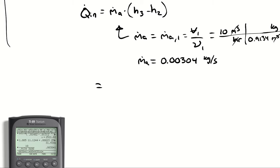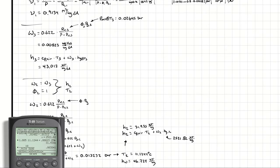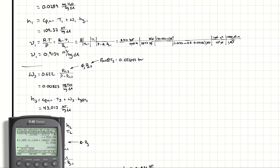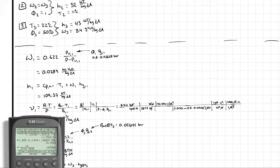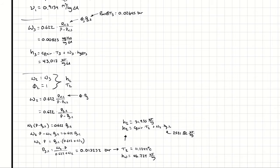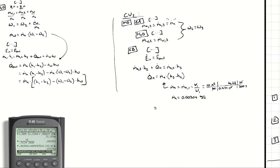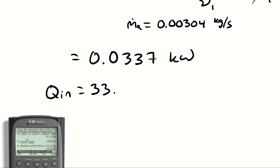Q̇_in = ṁ_a × (h3 − h2) = 0.00304 × (43.02 − 31.935), using the hand-calculated values. Note that for exam purposes at 1 atmosphere, using chart lookups is perfectly fine unless told otherwise. Q̇_in = 0.0357 kW, or about 33.7 watts.